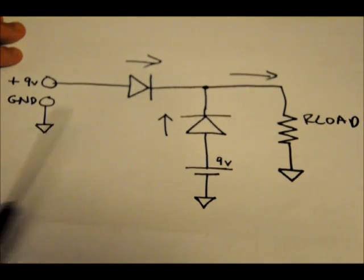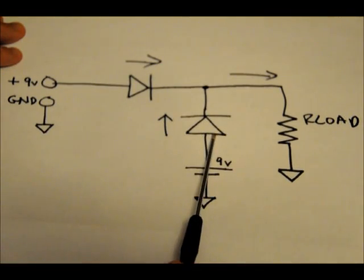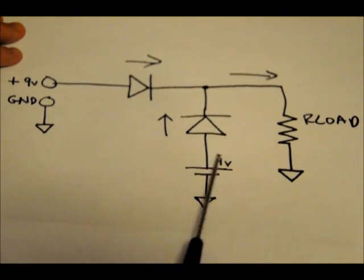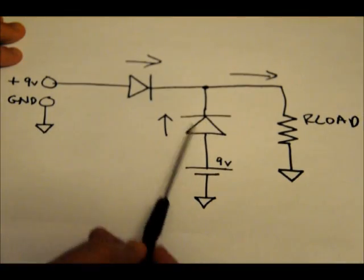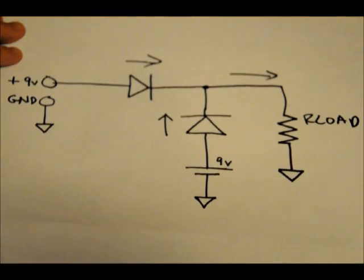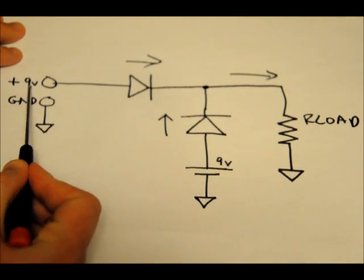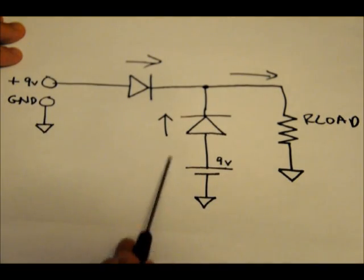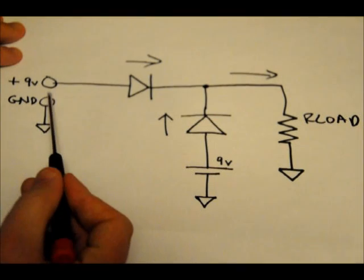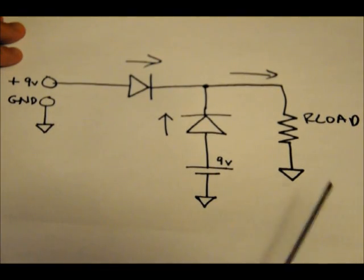However, what will happen is the voltage on the load will go from 12 volts down to 9 volts. The voltage source that's larger will be dominant over the load. So this is why I would use typically a larger voltage here like 12 volts and a smaller voltage here on the battery because this is a constant power source, this is a battery. The battery will die.